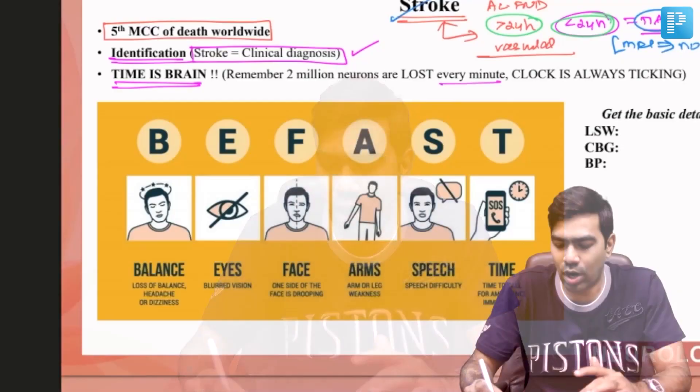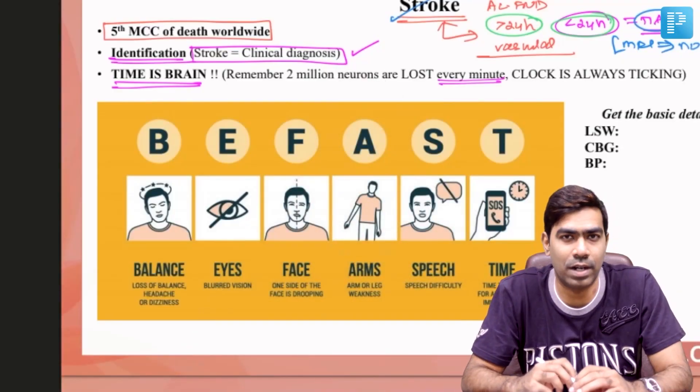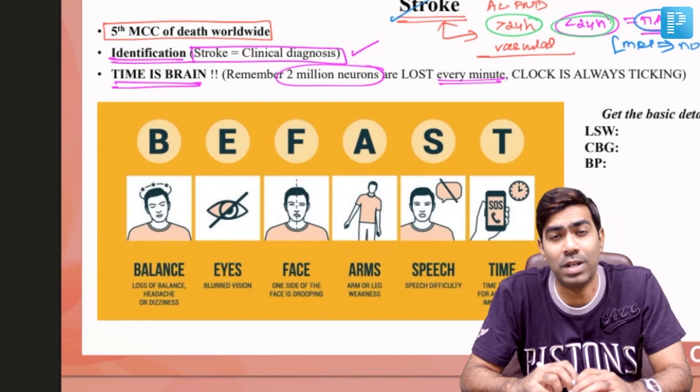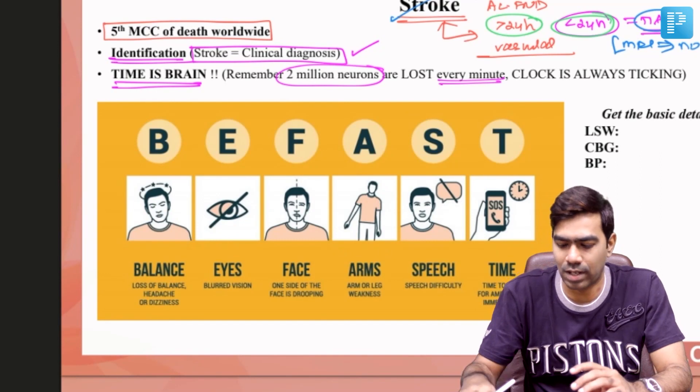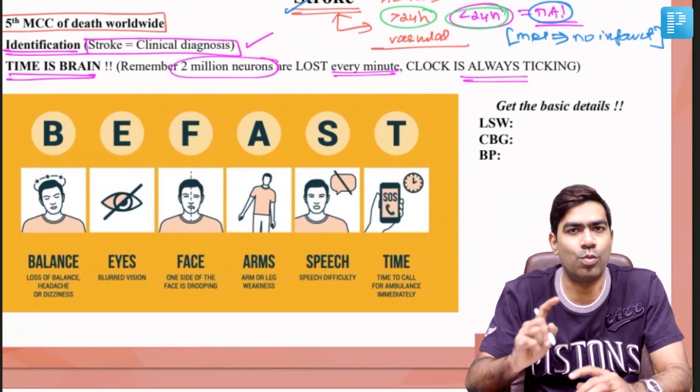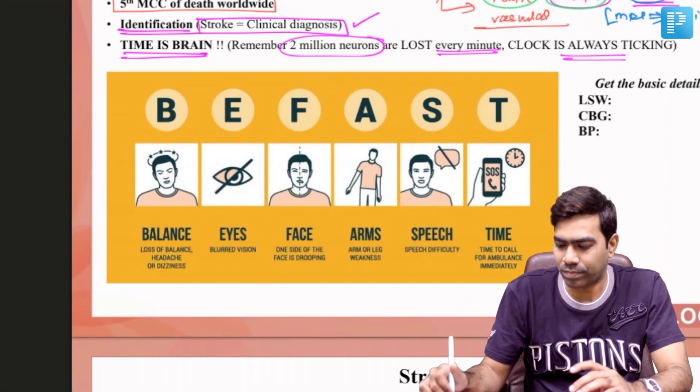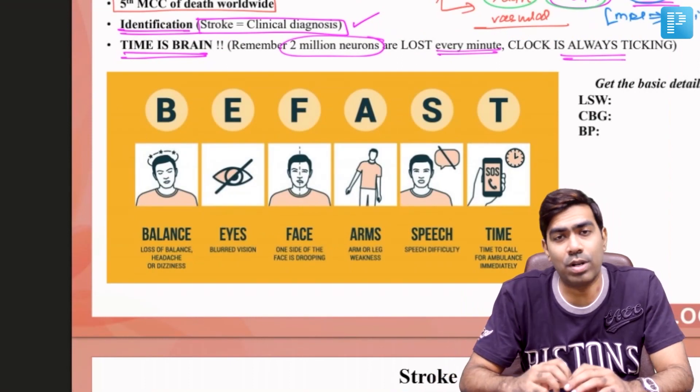Dr. Eugene Braunwald famously said that time is muscle — because every minute you waste by not giving reperfusion therapy to the heart, you lose a lot of muscle. Similarly, every minute you waste by not reperfusing the ischemic brain tissue, you lose approximately 2 million neurons, and they are dead forever. Remember, the clock is always ticking, so you need to act fast.